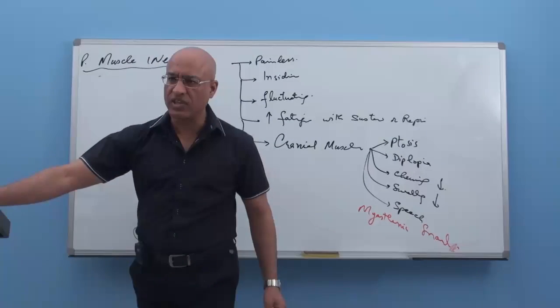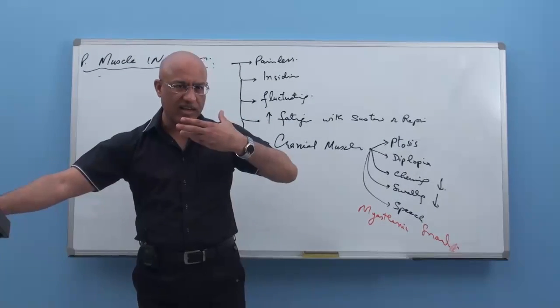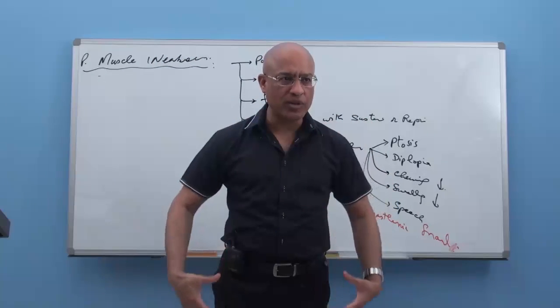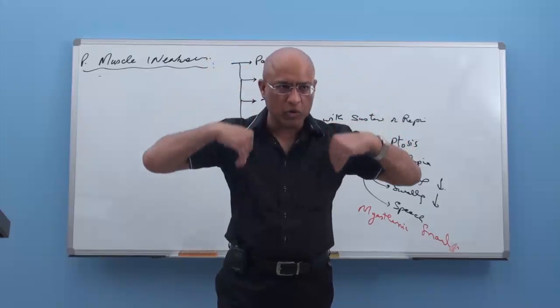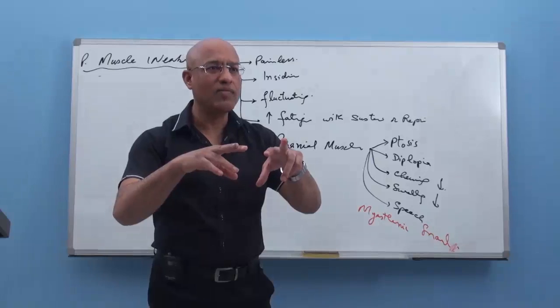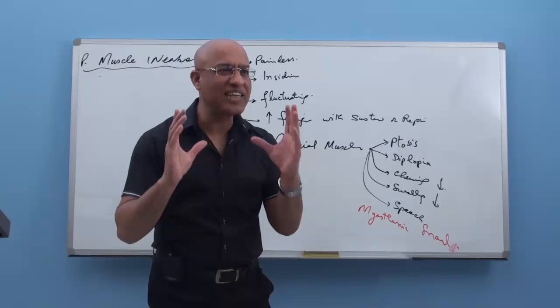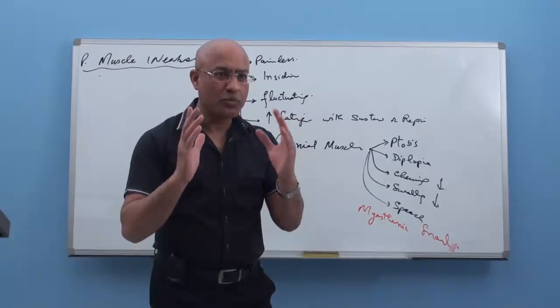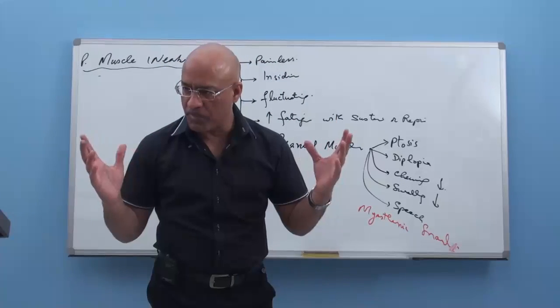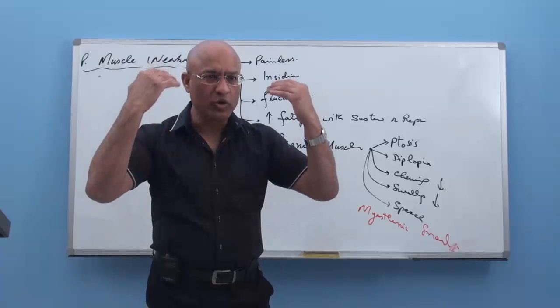So most of these patients develop features from this area. Now, in majority of the patient, then weakness spreads over the body. It starts from the top and goes down. But few lucky patients, disease remains limited to extraocular muscles.